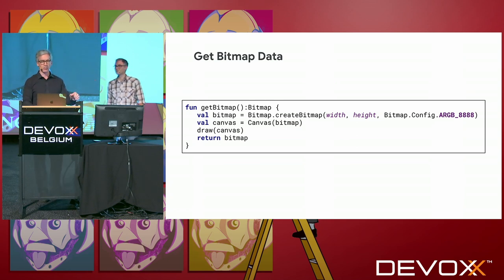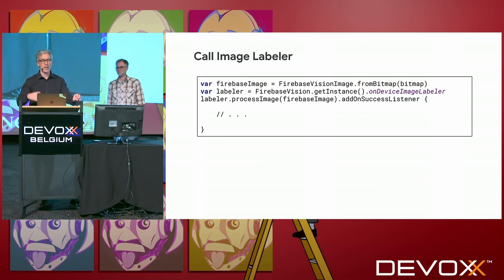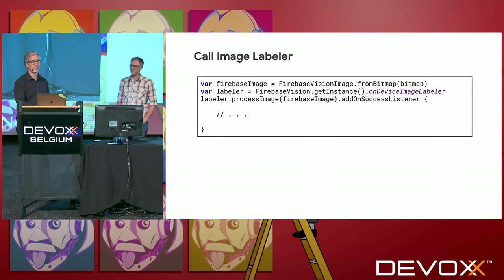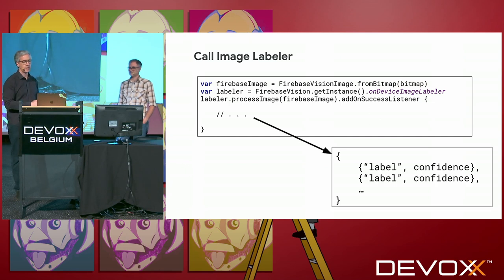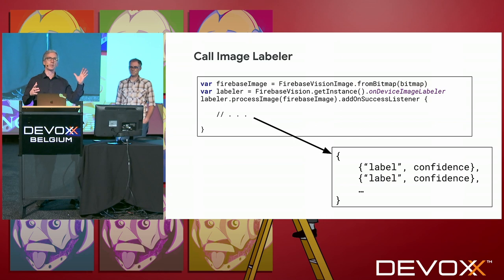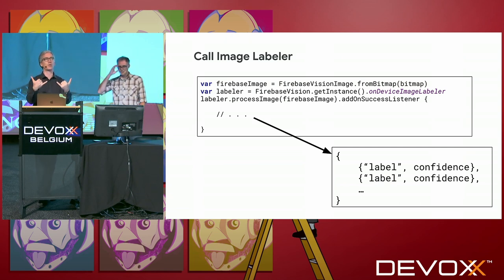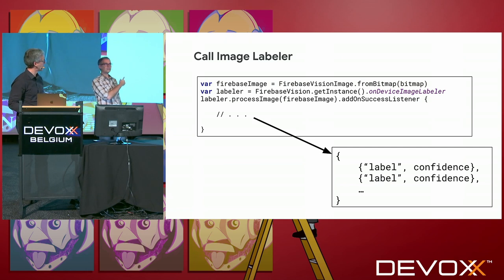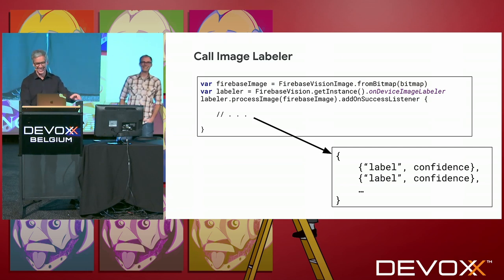We return the bitmap, and then we create the Firebase vision image from the bitmap itself — this is the user data. Then we use an API called on-device image labeler: I want to do local ML detection on the device with the built-in models. We process the image — this is the thing that actually runs the inference. Then you add a success listener as the callback. Eventually the code inside is called and we get a data structure — a list of items — where each item contains a label and a floating-point confidence value. Does anybody see the bug in that code? VARs. We don't need VARs.